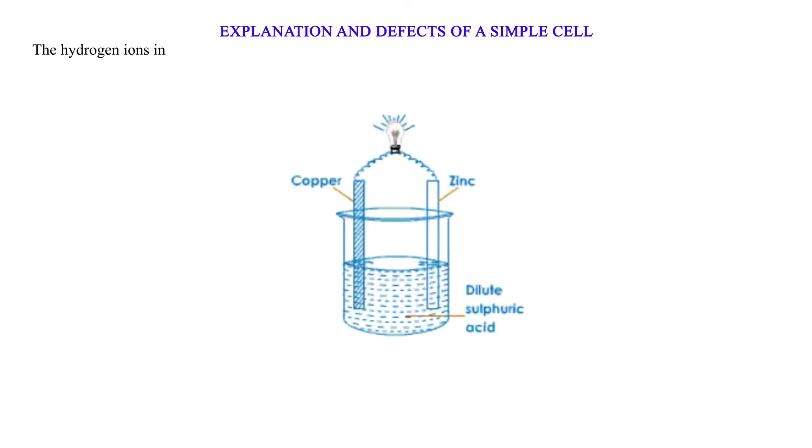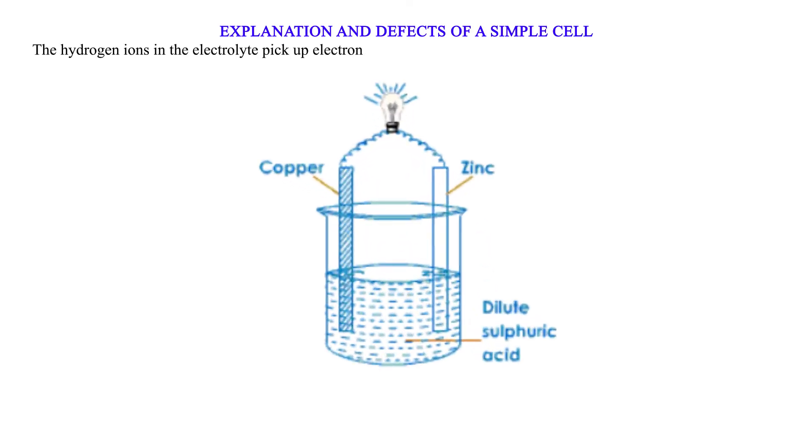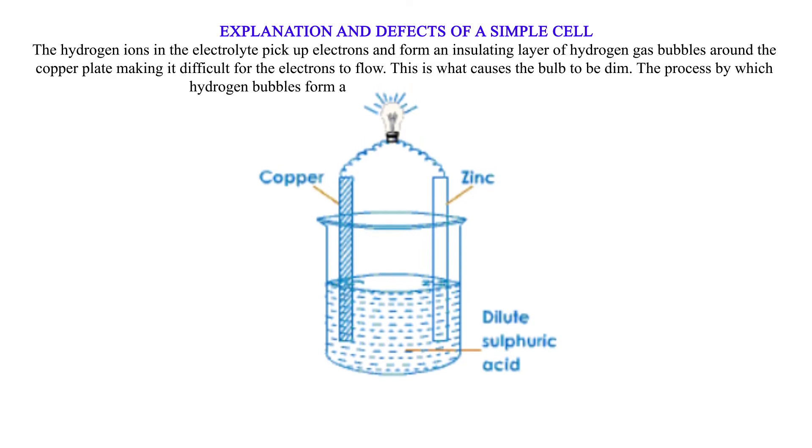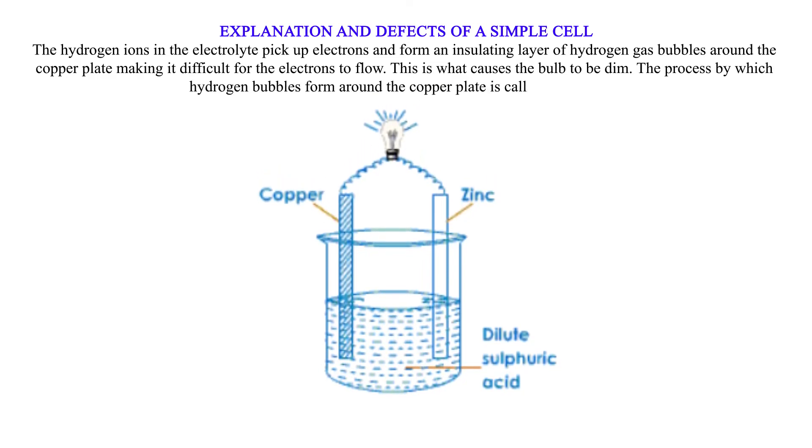Explanation and Defects of a Simple Cell. The hydrogen ions in the electrolyte pick up electrons and form an insulating layer of hydrogen gas bubbles around the copper plate, making it difficult for the electrons to flow. This is what causes the bulb to be dim. The process by which hydrogen bubbles form around the copper plate is called polarization.